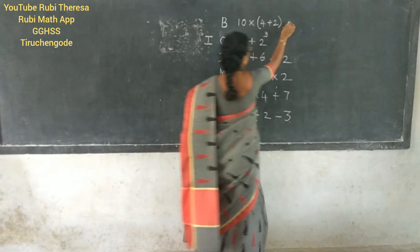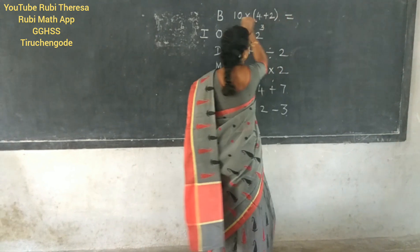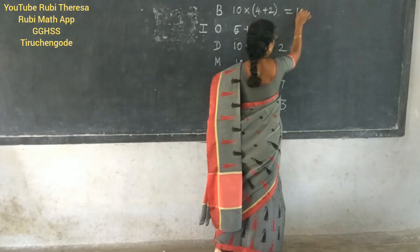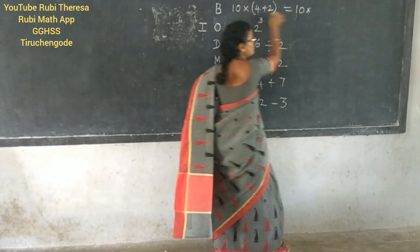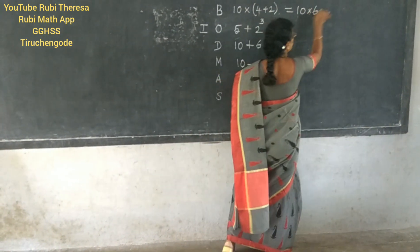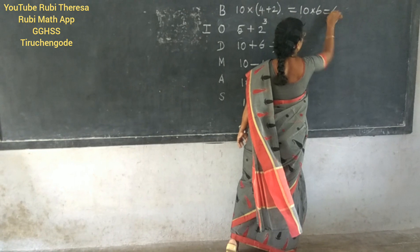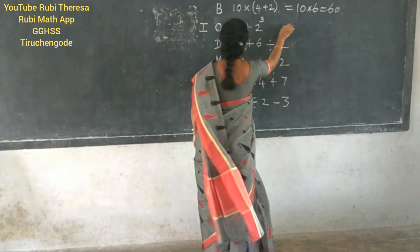So here, what is the calculation? 10 into 4 plus — who is? 6. So 10 is the finishing.